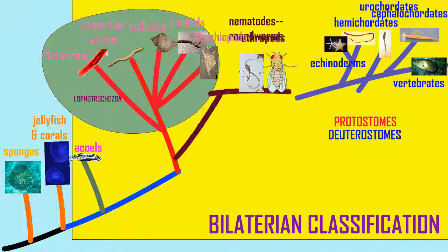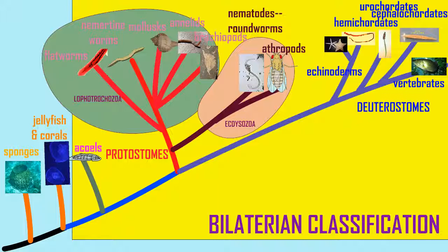the ecdysozoans, which include the nematodes, or roundworms, and the arthropods. So protostomes are now divided into two major clades, the Lophotrochozoans and the ecdysozoans. This new classification scheme has now gained general acceptance with a lot of molecular sequence support.